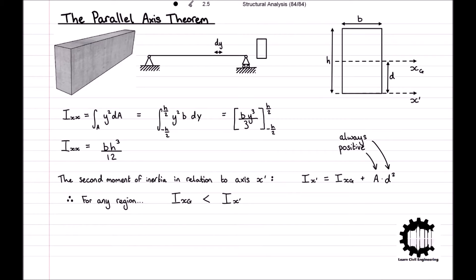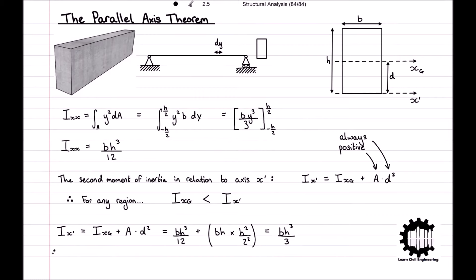We can prove this by considering our example again. We will use the parallel axis theorem to calculate the second moment of inertia for the rectangular section, relative to the x-prime axis at the base of the rectangle. Substituting our variables into the equation where Ix-prime equals Ixg plus A times d squared, we get Ix-prime equals bh cubed divided by 12 plus b times h times (h over 2) all squared, which equals bh cubed divided by 3. Therefore, the second moment of inertia relative to the x-prime axis is 4 times larger than the second moment of inertia relative to the centroidal axis xg.